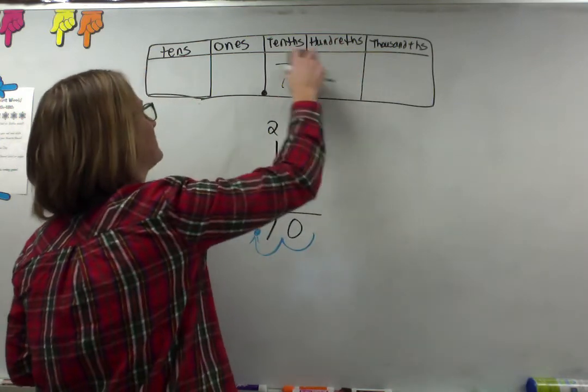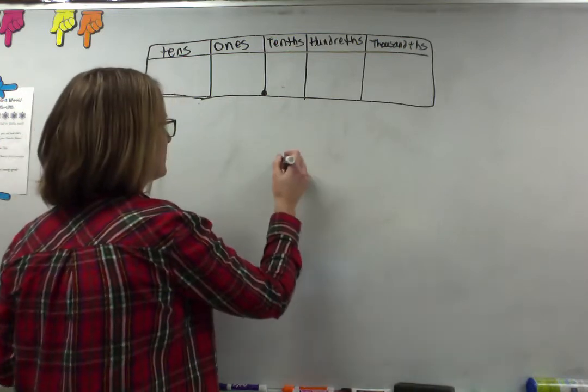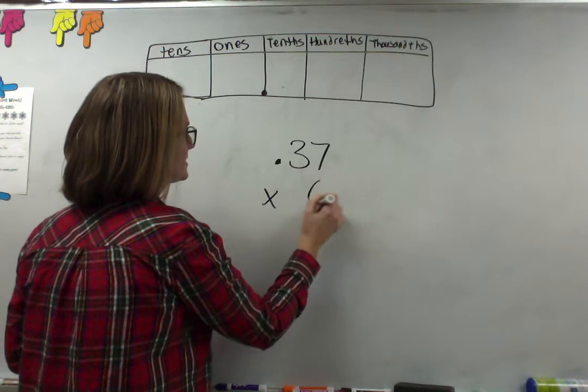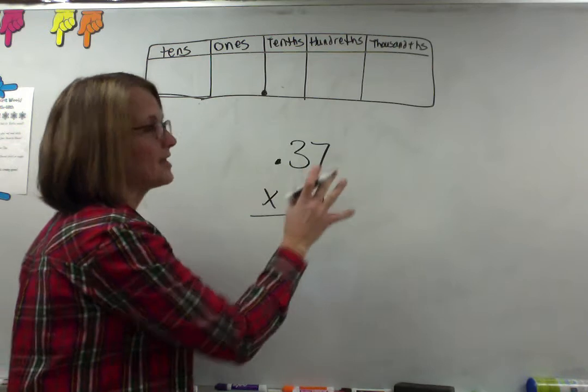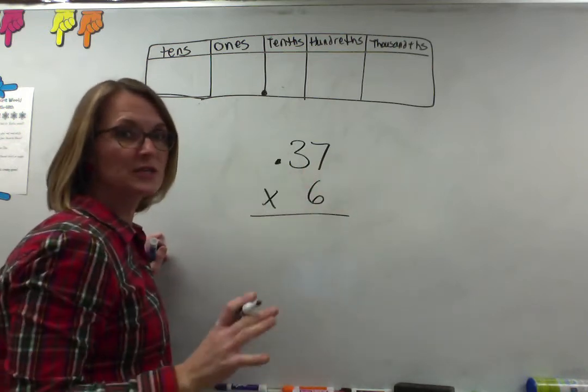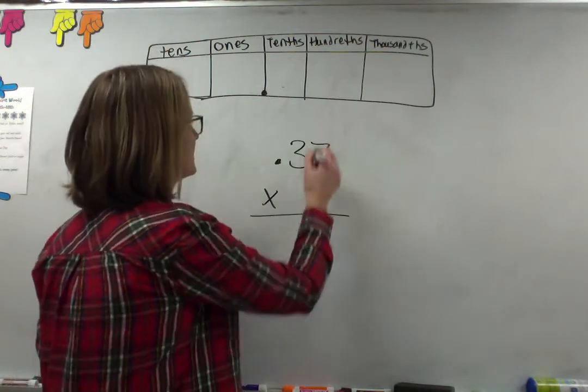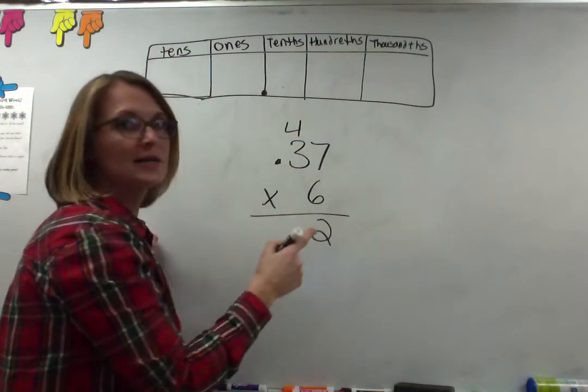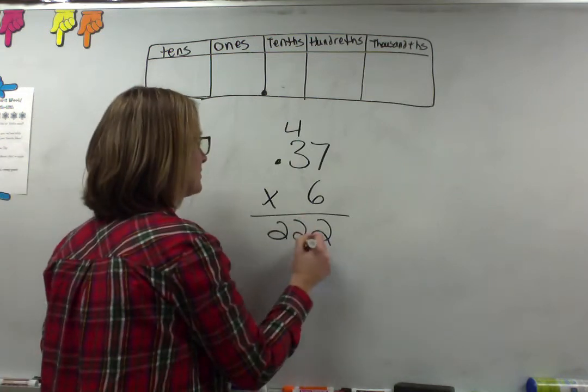Now let's try a number that's getting a little bit bigger. Let's do something like 0.37 times 6. So we're going to have six groups of 37 hundredths. Again we're going to ignore our decimal until we finish the problem. So we've got 6 times 7 is 42. Put down the 2, carry the 4. 6 times 3 is 18 plus 4 is 22.